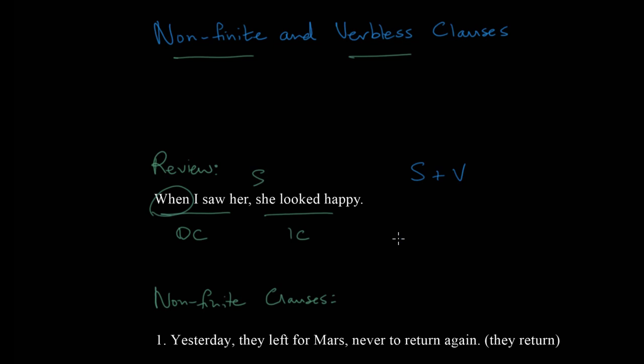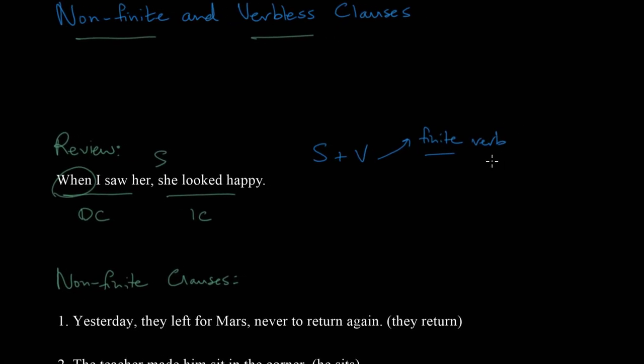Now the thing about these types of clauses is that the verb is usually what we call a finite verb. And what we mean by the word finite is that it is limited in some way. So if we talk about a finite resource, that's a resource that might run out. A finite verb is marked for three things in particular: tense, present tense, past tense, that kind of thing, and number.